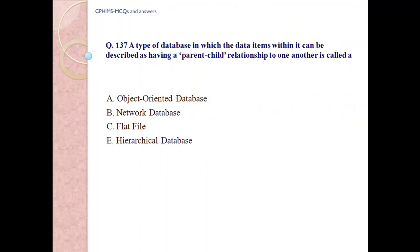Question number 137. A type of database in which the data items within it can be described as having a parent-child relationship to one another is called: A) object-oriented database; B) network database; C) flat file; D) hierarchical database. Answer D. Hierarchical database.